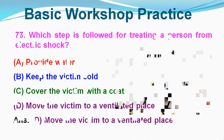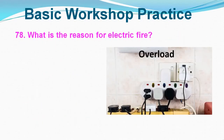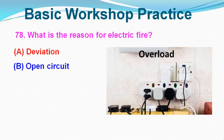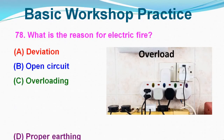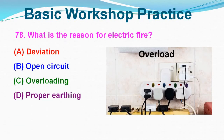Question No. 78: What is the reason for electric fire? Option A: Deviation, Option B: Open circuit, Option C: Overloading, Option D: Proper earthing. Correct answer is Option C, Overloading.